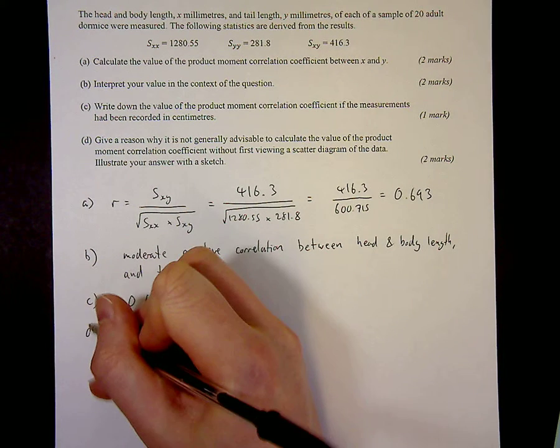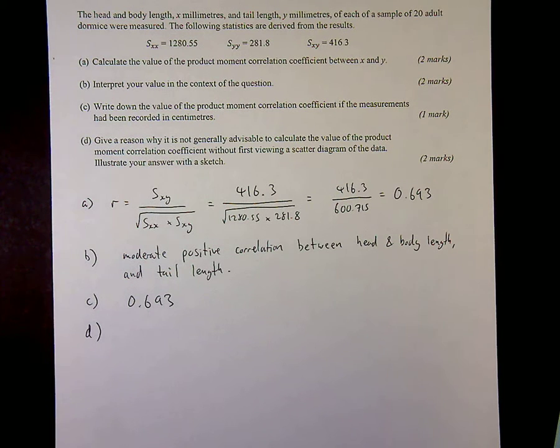And for the final couple of marks, part D. Give a reason why it's not generally advisable to calculate the PMCC without first viewing the scatter diagram. Well, there are several different reasons you could look for this. One is that the PMCC only deals with linear relationships.